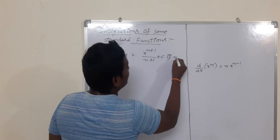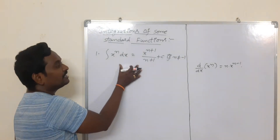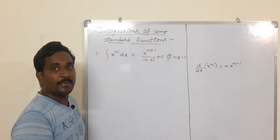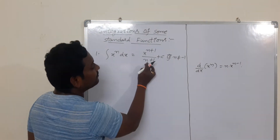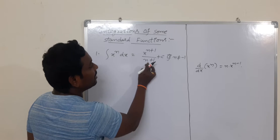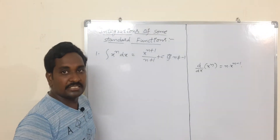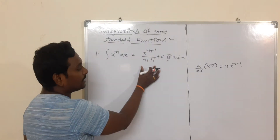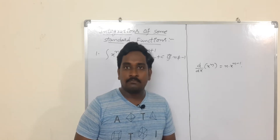This formula is valid only when n is not equal to minus 1. If n is equal to minus 1, the denominator becomes 0 (minus 1 plus 1 equals 0), and if the denominator is 0 then the entire value becomes infinity, which is undefined. How can we get this formula? Very simple — from the definition of integration.